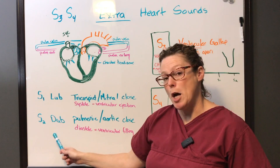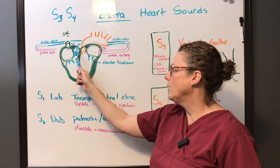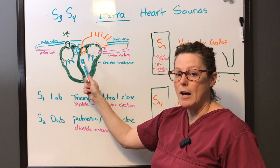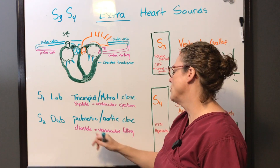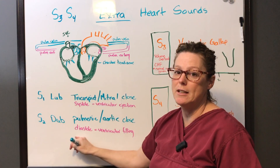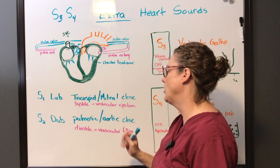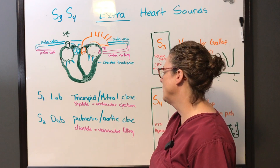S2 is the dub. It is when our pulmonic and aortic valves close, and it is the onset of diastole.